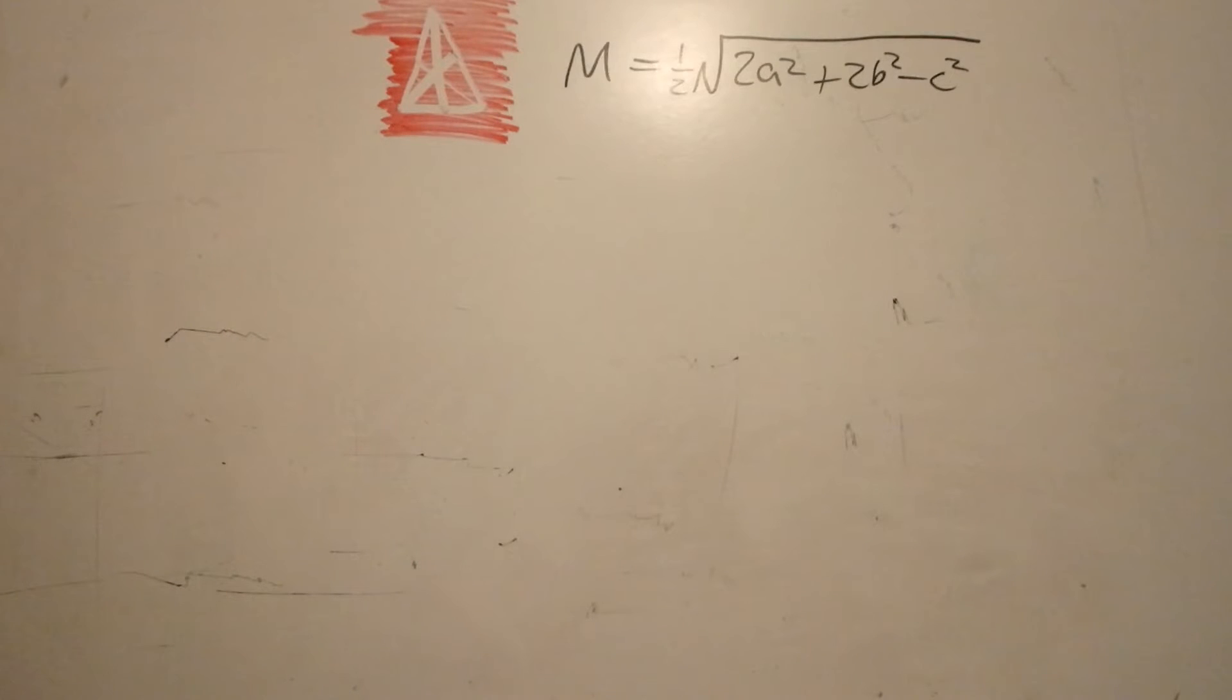So the general median formula is that the median is equal to one-half the square root of 2a squared plus 2b squared minus c squared, where a, b, and c are sides, and c is the side that it touches. What we're ultimately trying to do is solve one side based off of the three medians, as opposed to this where we're solving one median based off of the three sides.